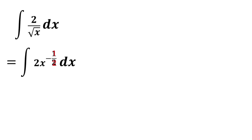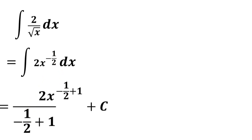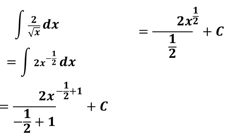Using the power rule, this is equal to 2x to the power negative 1 half plus 1, all over negative 1 half plus 1, plus c. Negative 1 half plus 1 is the same as 1 minus 1 half, so it's equal to positive 1 half. So this is equal to 2x to the power 1 half all over 1 half, plus c.